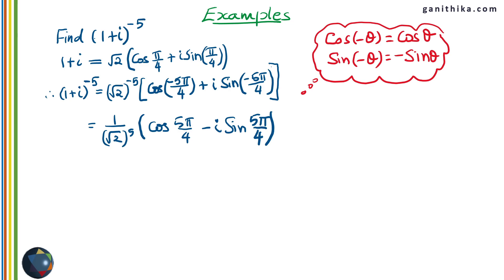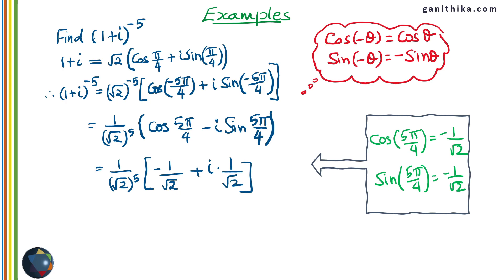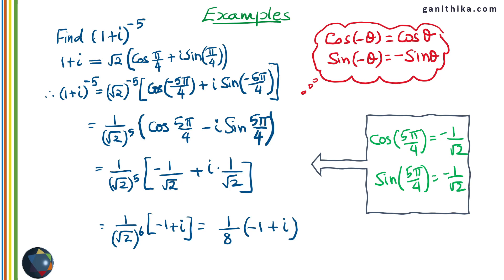Since 5π/4 is a special angle, we substitute the known values of cos(5π/4) and sin(5π/4). This gives −1/√2 + i(1/√2) — note the imaginary part becomes positive due to the negative sine. Taking the common denominator and combining with (√2)^5, the result becomes 1/(√2)^6 × (−1 + i). Simplifying (√2)^6 = 2³ = 8, the final answer is (1/8)(−1 + i).